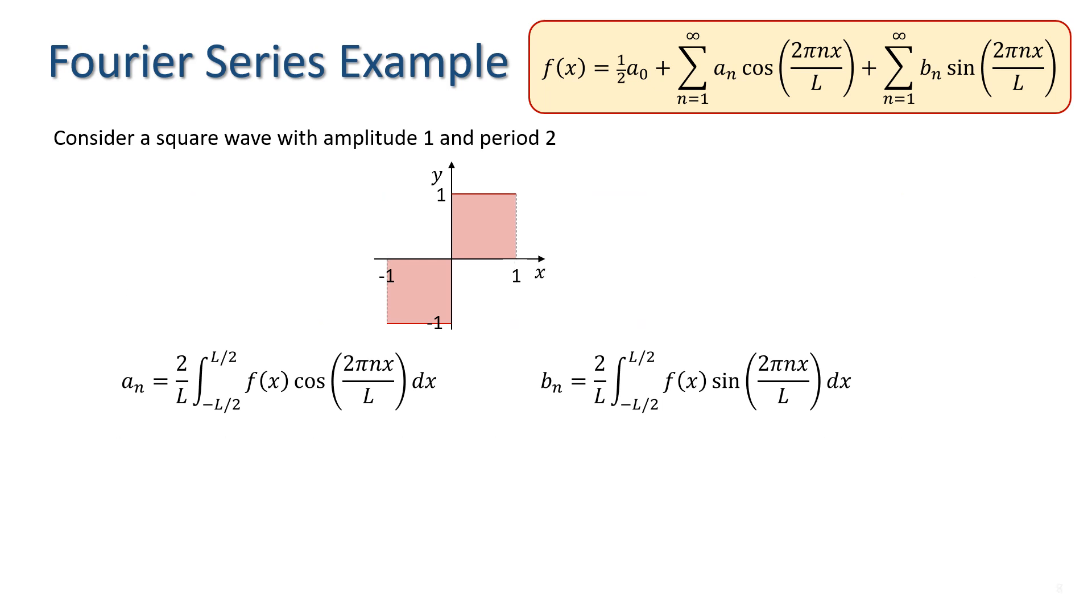Okay, so we can substitute our function values into the formula for a_n and b_n. In this case, the integration is easy since the function just has constant values in the intervals minus 1 to 0 and 0 to 1. Looking at a_n first, we have the integral between minus 1 and 0 of minus cos n pi x plus the integral between 0 and 1 of cos n pi x.